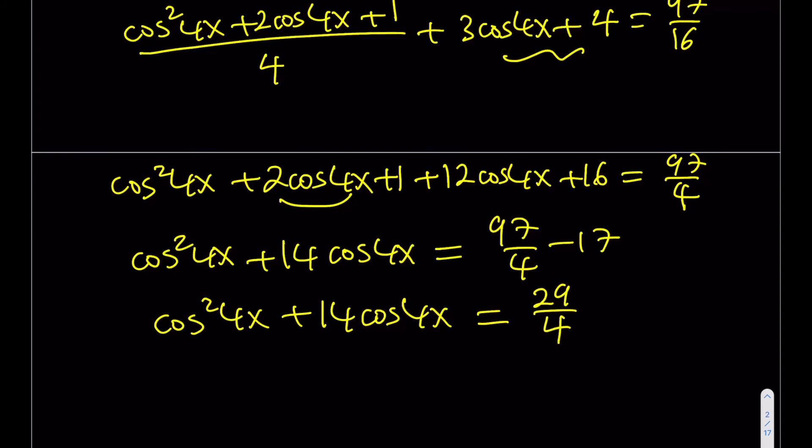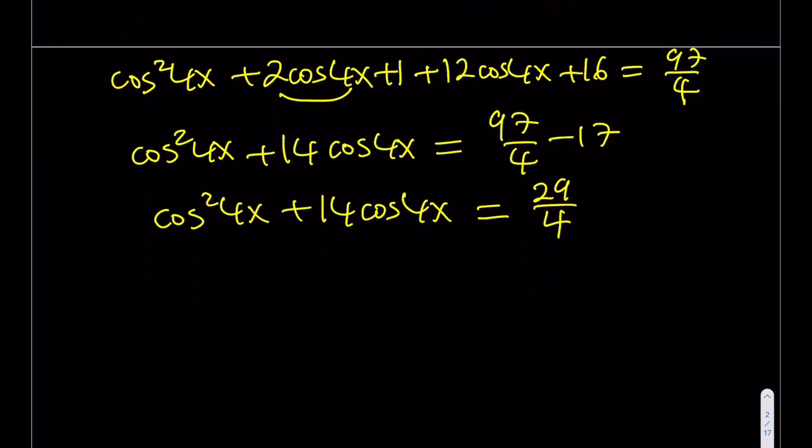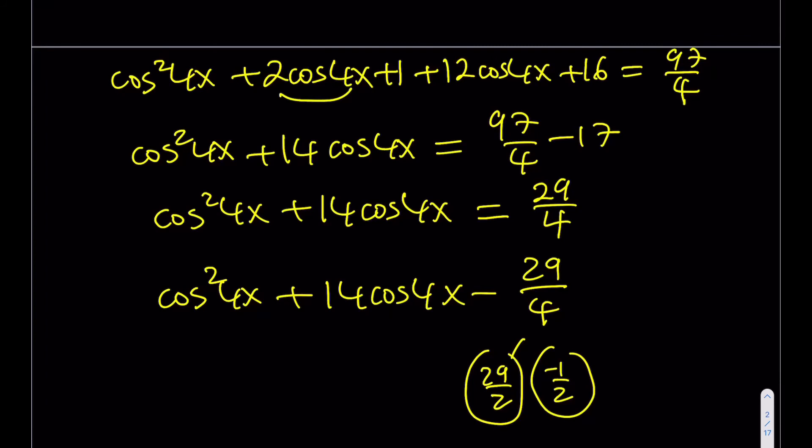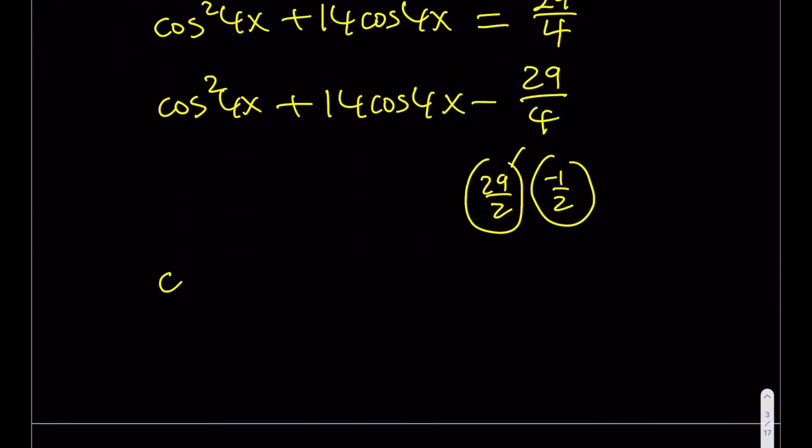Here's the million dollar question. Is there a way to factor this expression? Yes, if you know that 29 over 4 can be factored into two expressions whose sum is 14, and that can be done. Because you can basically split it up into 29 halves and 1 half, and one of them has to be negative, and their sum is going to be, actually, not this one, because we want their sum to be positive, so we're basically dealing with these two. Notice that the sum of these two numbers is equal to 14. So now we can write it as cosine of 4x plus 29 over 2 and then cosine of 4x minus 1 half, and the whole thing is equal to 0.